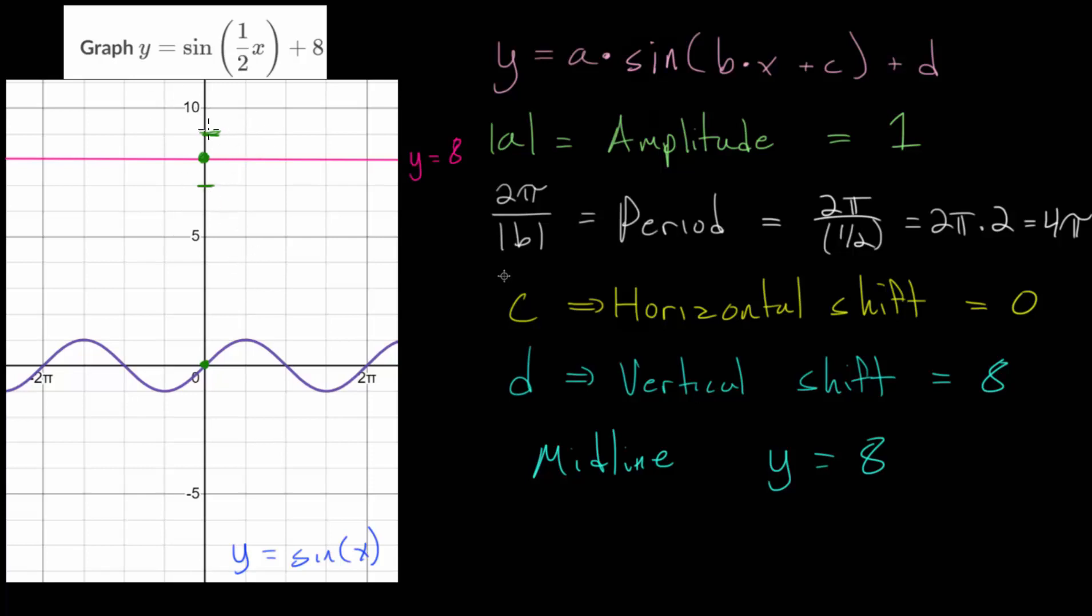But to figure out our next point, we need to consider this period here. Essentially, because this b value is a fraction, it will horizontally stretch the function out. In fact, since its period is twice the period of our parent function, the maximums will be twice as far apart.